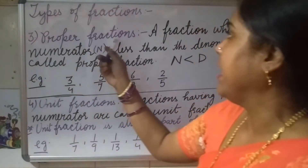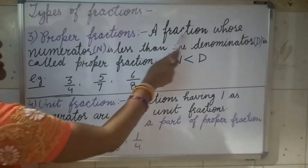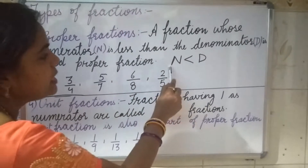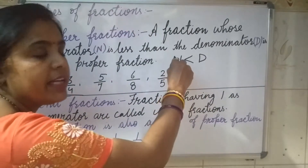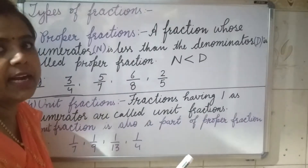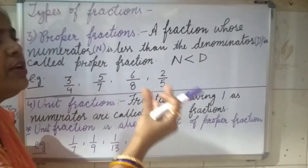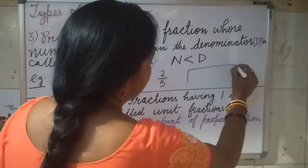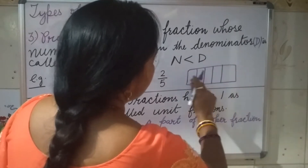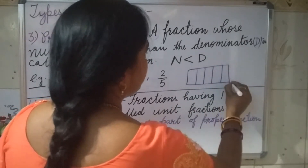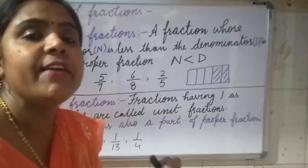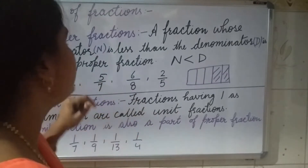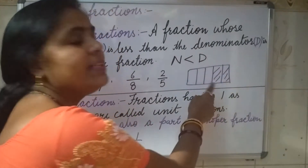The third type is proper fraction. A fraction whose numerator is less than the denominator is called a proper fraction. The condition for a proper fraction is: numerator is less than denominator. In general, whatever fractions we deal with are all proper fractions, because whenever we take out a fraction the denominator will be more. For example, 2/5 — out of 5 parts, I am taking 2 parts. So 2/5, 6/8, 5/7, 3/4 — these are all proper fractions. Numerator is always smaller than the denominator.